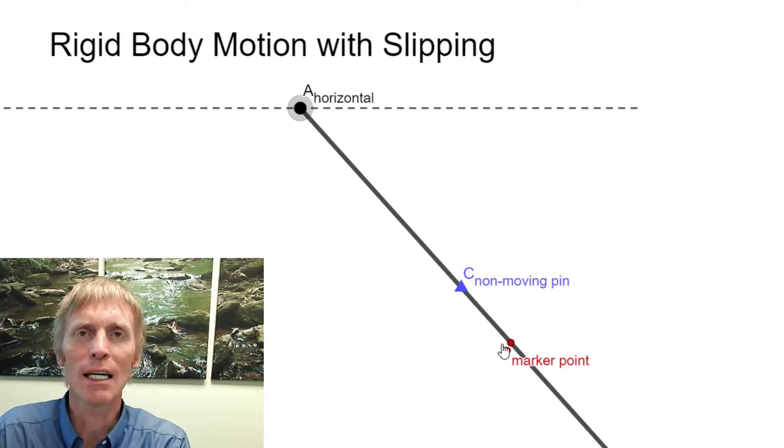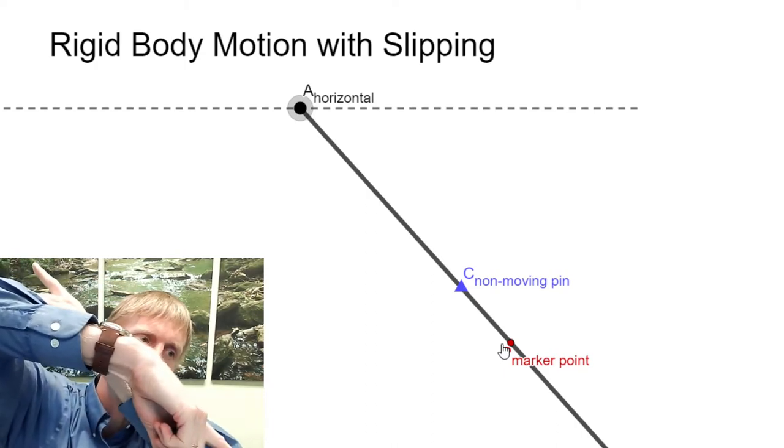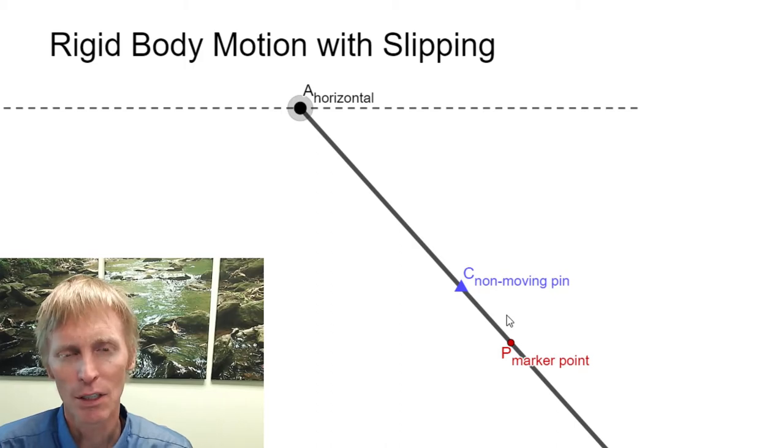Noting that slipping velocity, those relatives of C relative to P and P relative to C are equal and opposite. They're in opposite directions. And that should make sense.